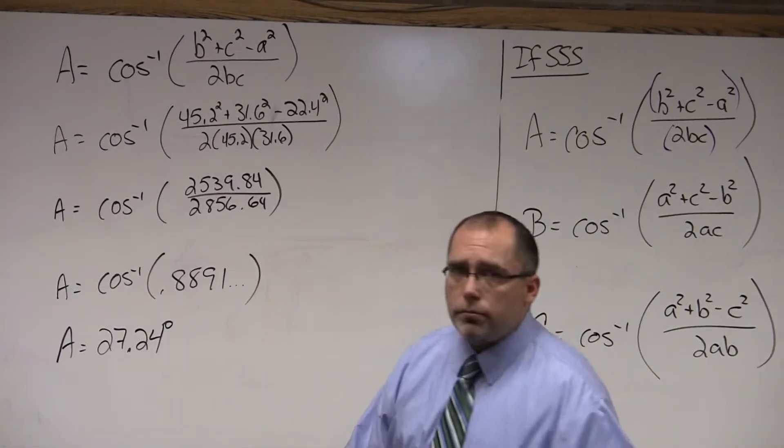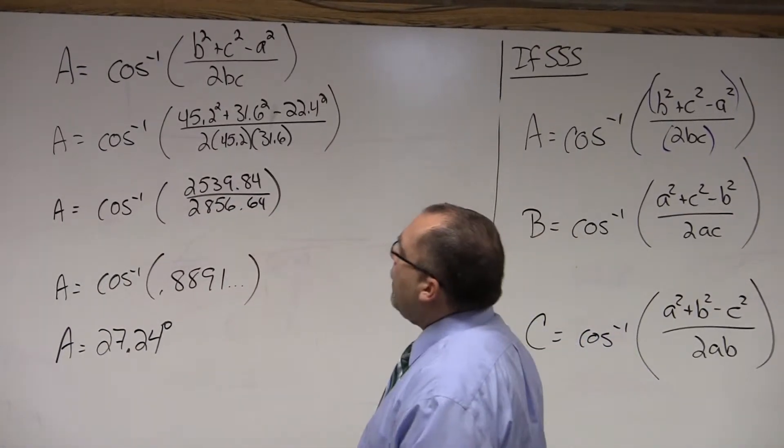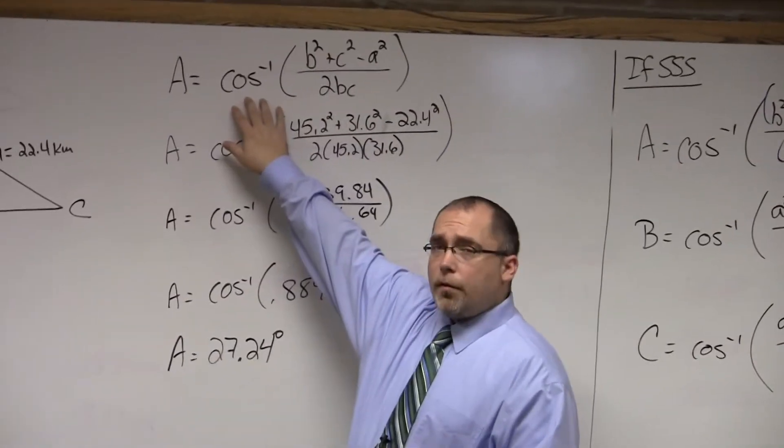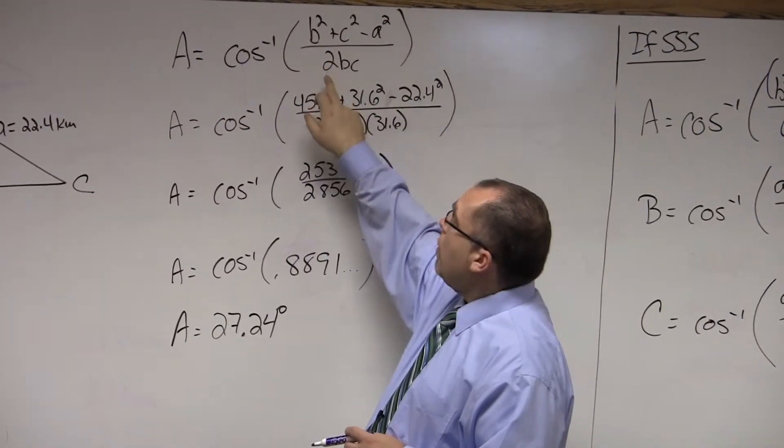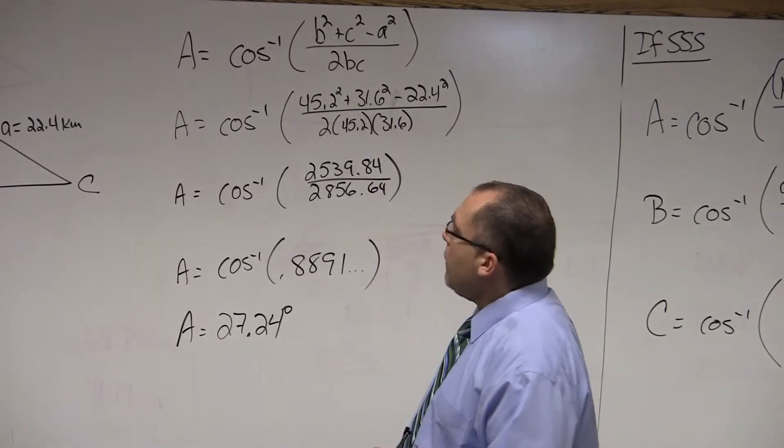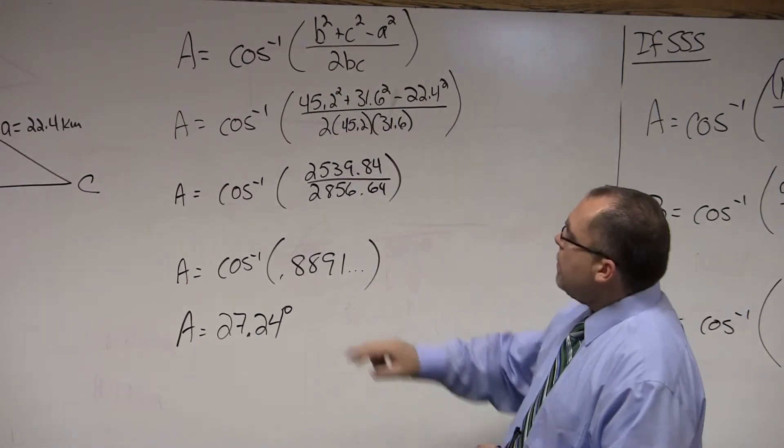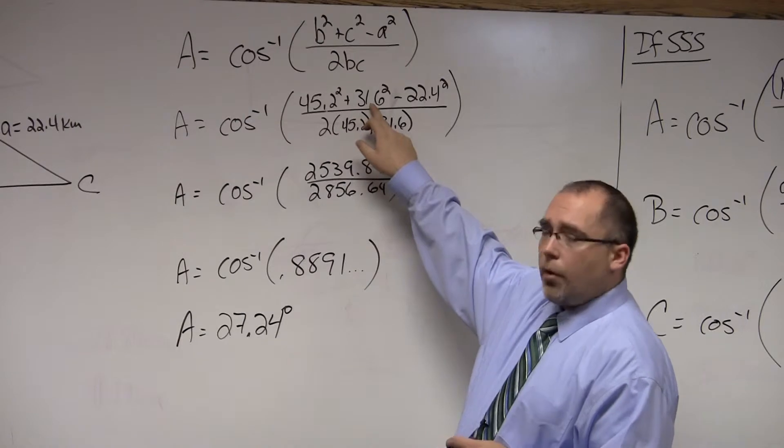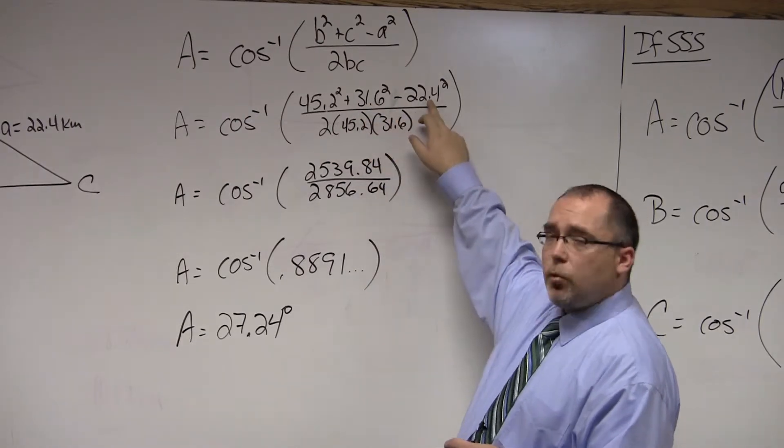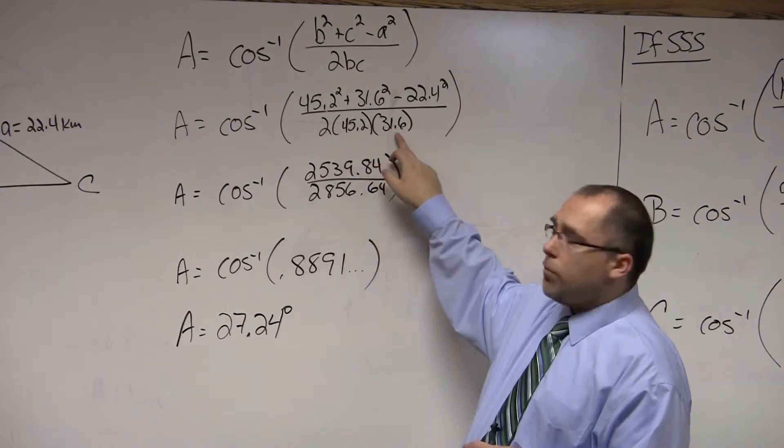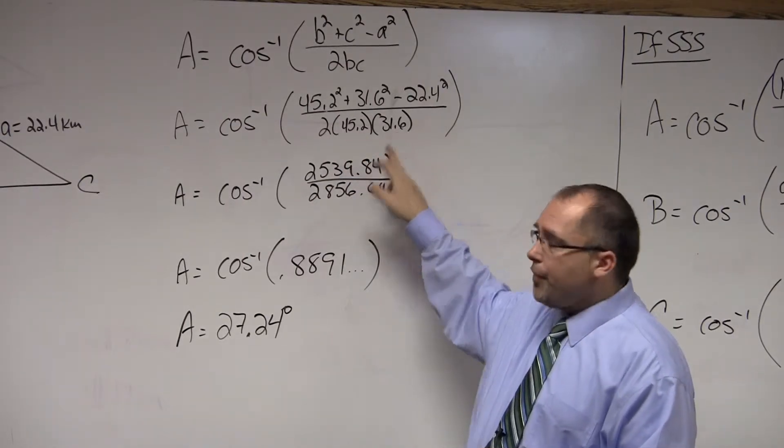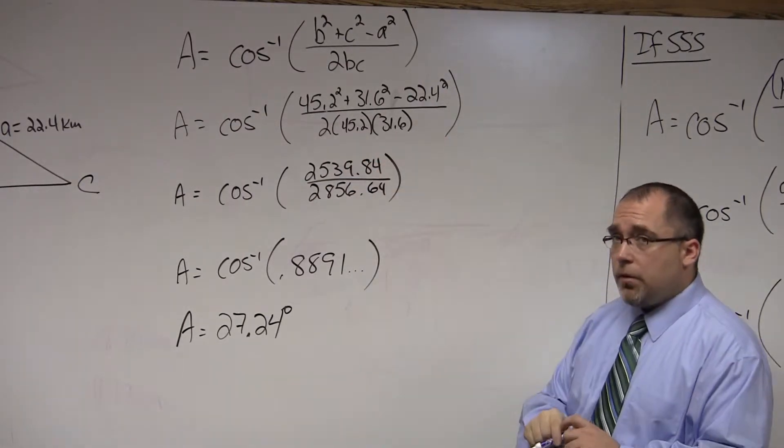Now, say we want to solve for angle A. I just chose that one at random. Now, we want to naturally use the law of cosines set for angle A, which is b squared plus c squared minus a squared over 2bc. So, we plug in our values, 45.2 squared plus 31.6 squared minus 22.4 squared, all over 2 times 45.2 times 31.6.